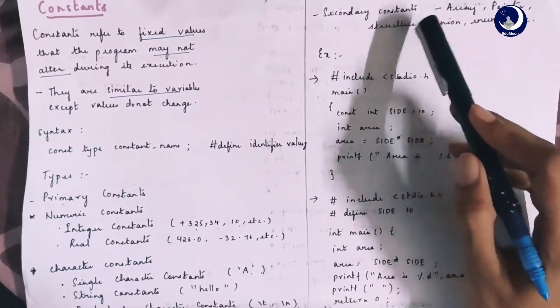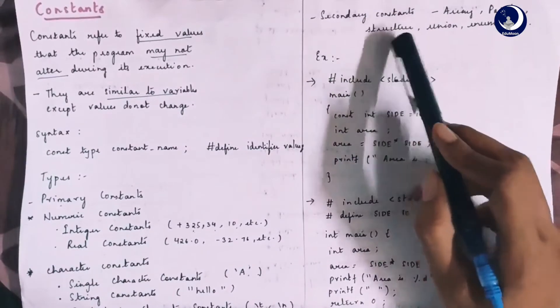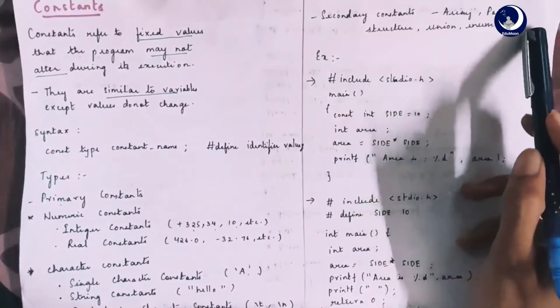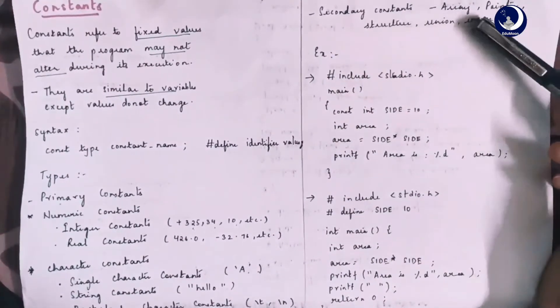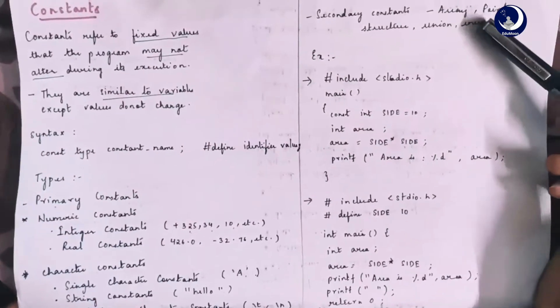Secondary character constants are arrays, pointers, structure, union, enum, etc. We will discuss more about secondary constants in the coming lectures.